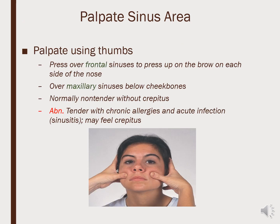When we palpate the sinuses, we assess for any tenderness, crepitus, pain, or fluid. The frontal sinuses are on the forehead, the maxillary sinuses are across the zygomatic process, the ethmoid sinuses are around the inner parts of the eyes, and the sphenoid sinuses are behind those. The sinuses that can be directly palpated are the maxillary and the frontal.